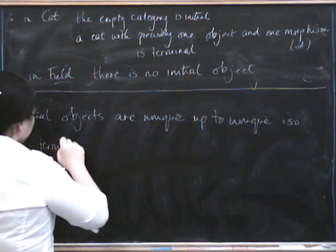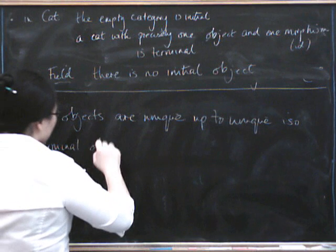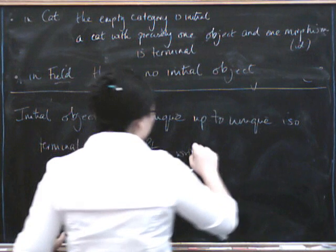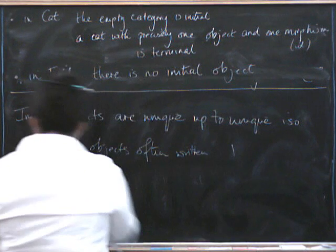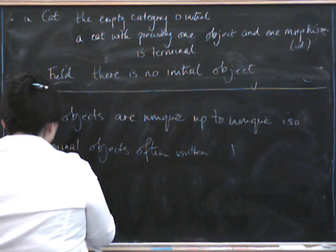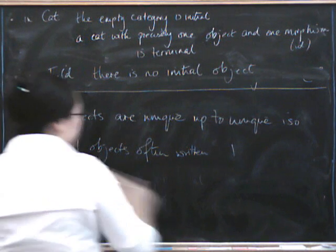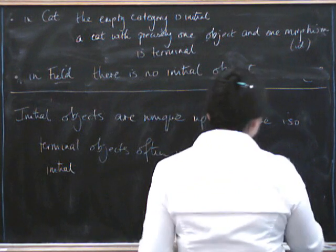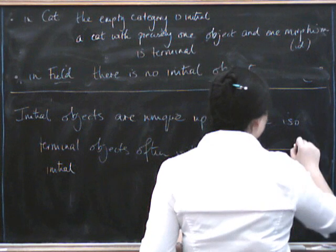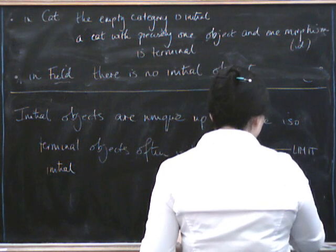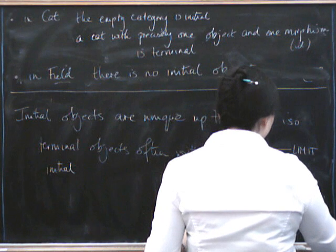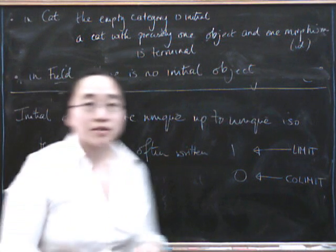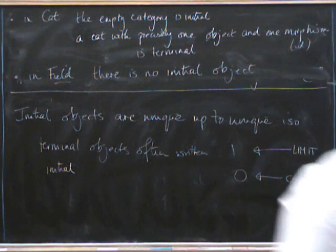Finally, a bit of notation. Terminal objects are often written as one, and initial objects as zero. And for future reference, note that terminal objects are a kind of limit, and initial objects are a kind of co-limit. So we'll see what that means later. Thank you.